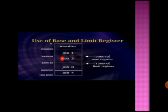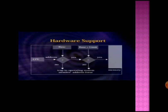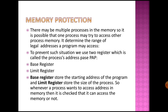Agar condition false hai to iska matlab hai ki wo Job 3 wala part access karna chahta hai, kyunki value isse zyada ho jayegi. Isliye operating system us user ko Job 3 part access karne nahi dega. Is tarah se hamari memory protection hoti hai, jiske liye base register aur limit register use hote hain, jisme har job ki access range store hoti hai.